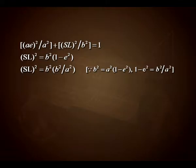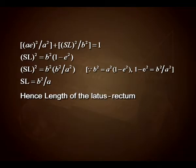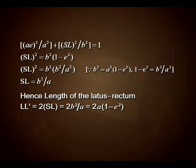Since b² = a²(1 − e²) and (1 − e²) can be written as b²/a², so SL = b²/a. Hence, the length of the latus rectum LL' is equal to 2·SL, that is 2b²/a, or equivalently 2a(1 − e²).